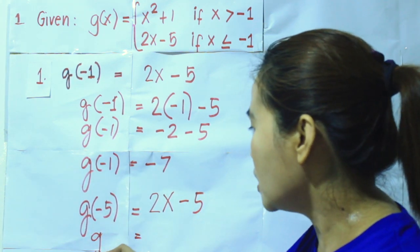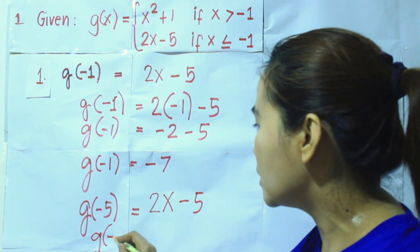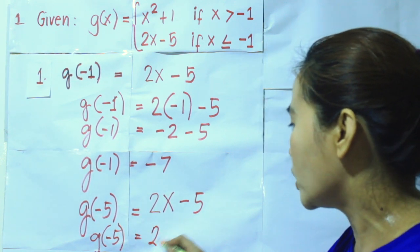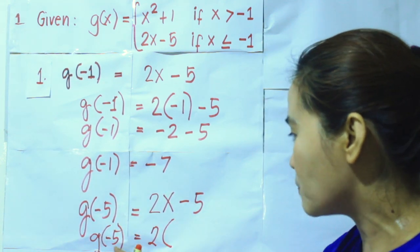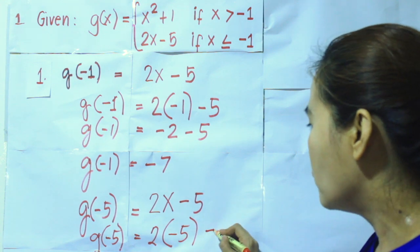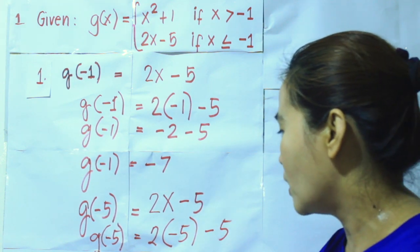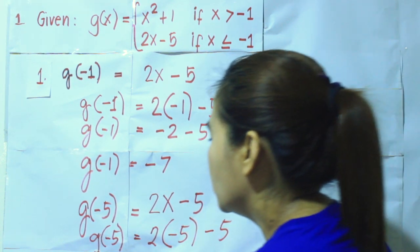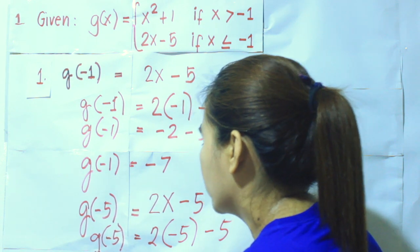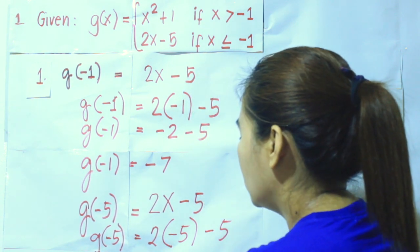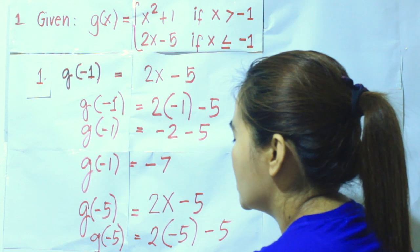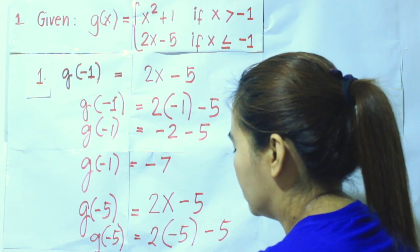So g of negative 5 is equal to 2 times negative 5 minus 5, which equals negative 10 minus 5, which is equal to negative 15.